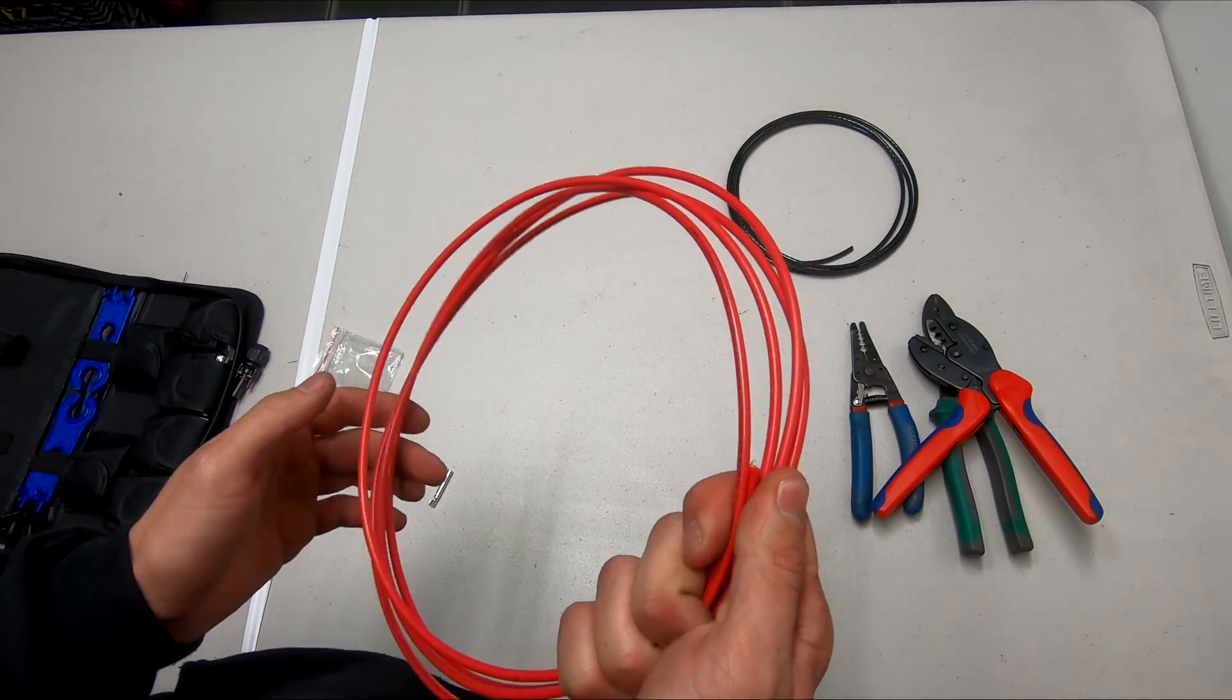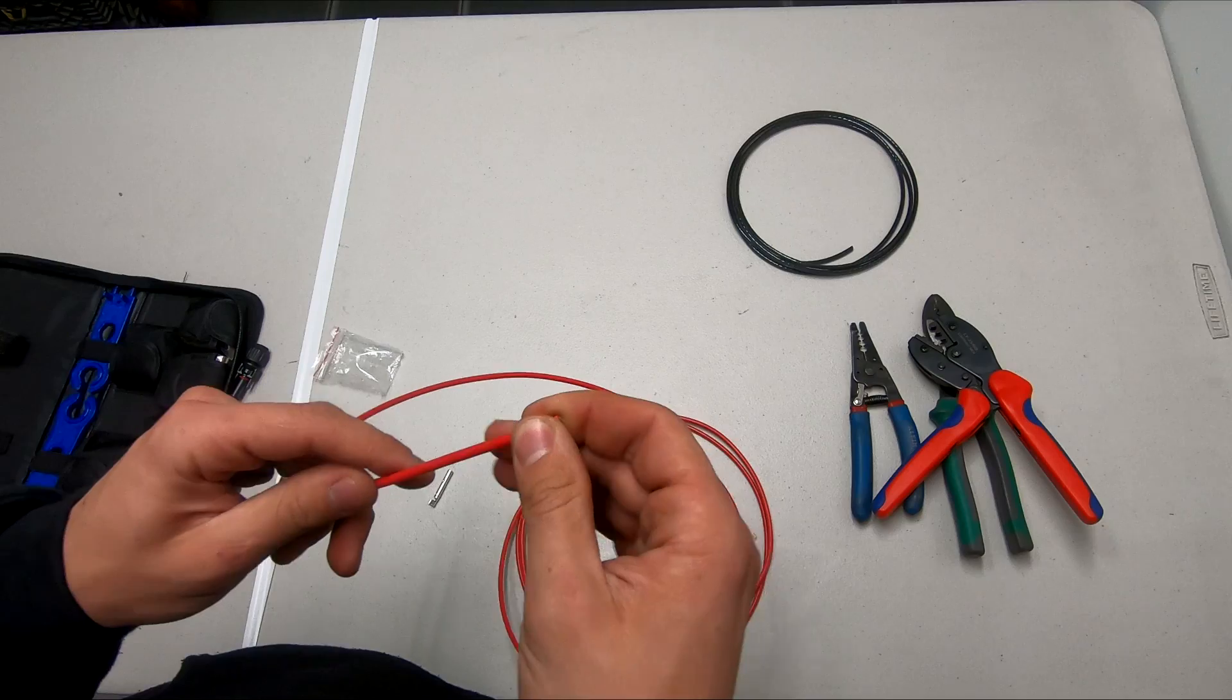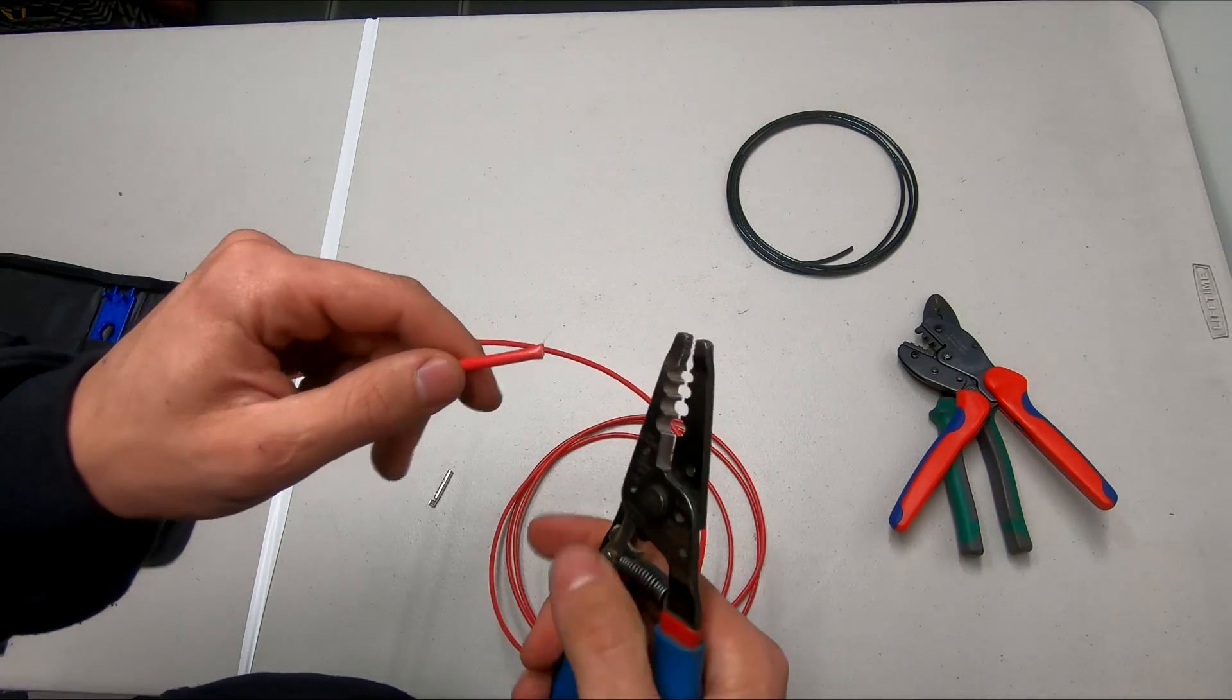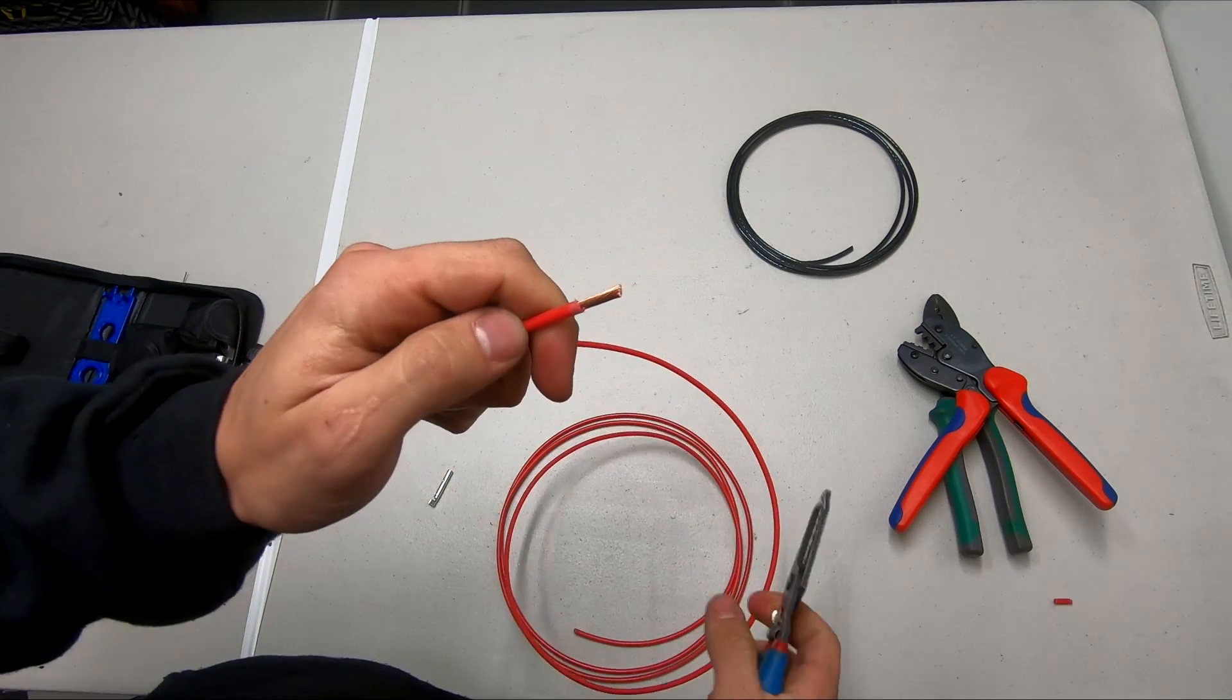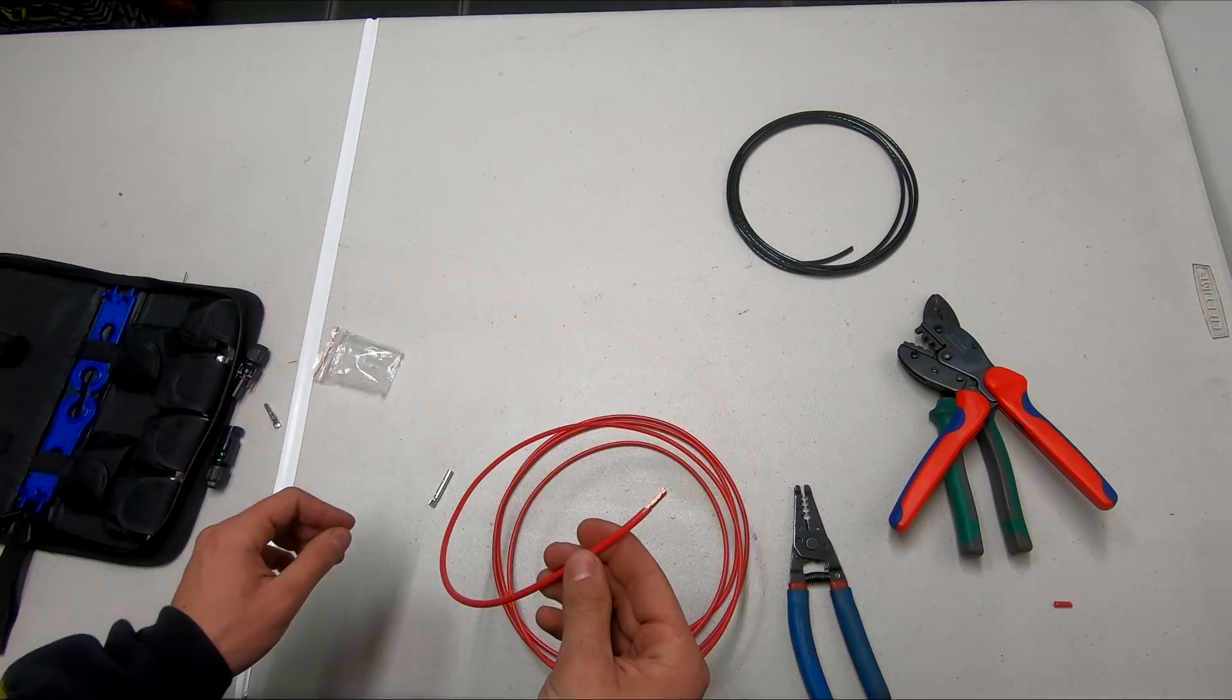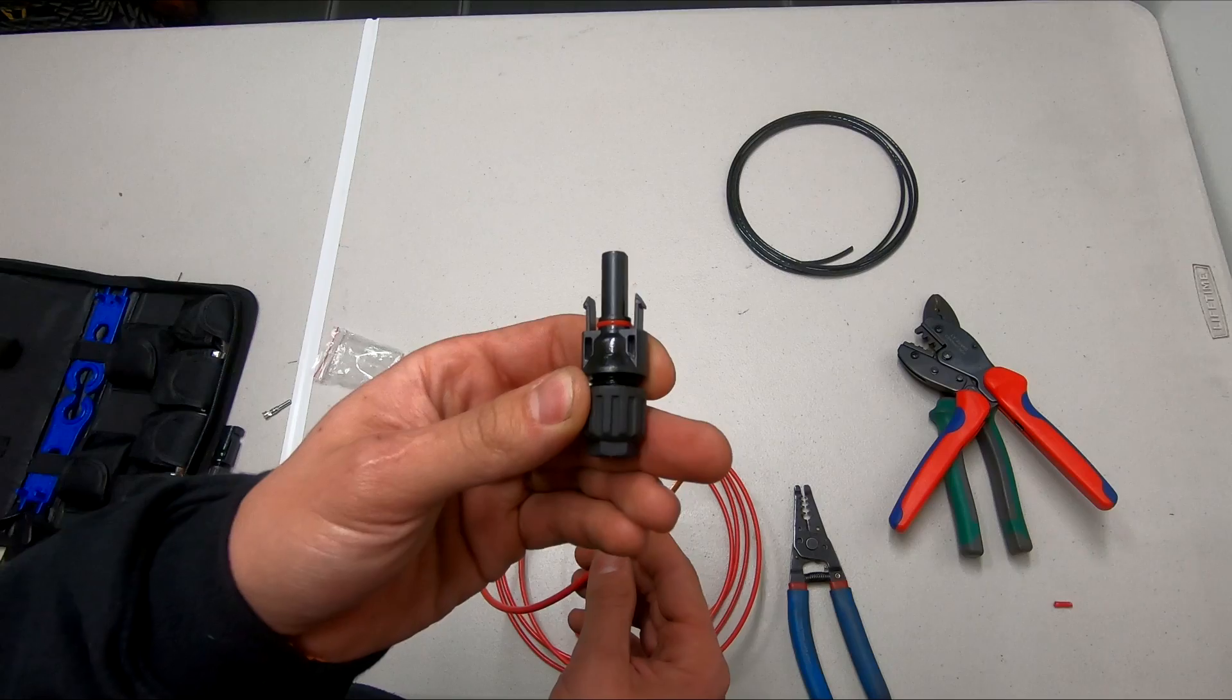Typically your solar panels will already have connectors on them, but in this case I don't have a solar panel handy so I'm going to take my wire and strippers and strip off about a half inch of insulation. Be sure to use the correct setting on the stripper for the size wire that you're dealing with.